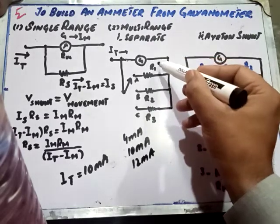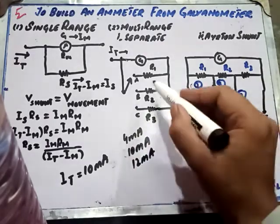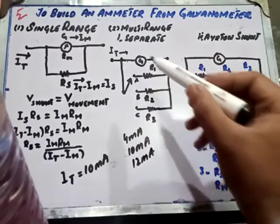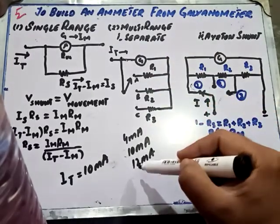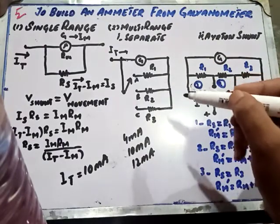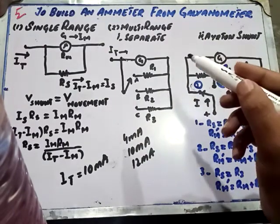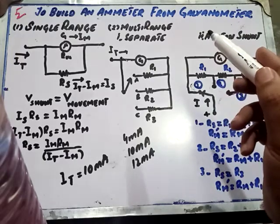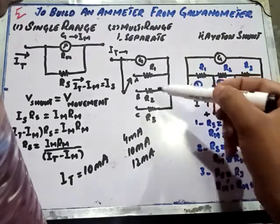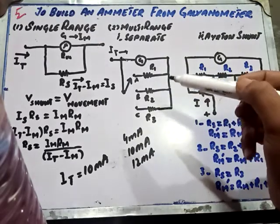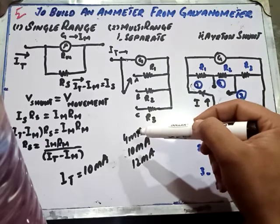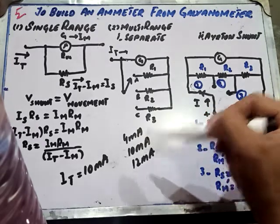To determine R1, you use IT = 4 mA; for R2, use IT = 10 mA; and for R3, use IT = 12 mA. In this way, you form the multirange ammeter using the galvanometer with separate shunts, where each shunt value corresponds to the current range for which the ammeter is being designed.